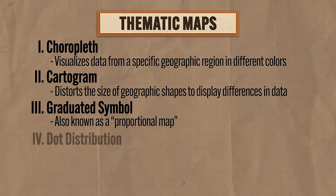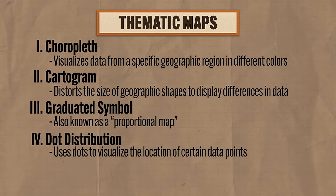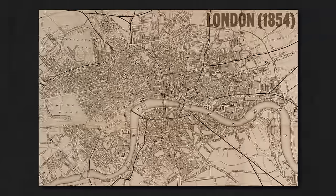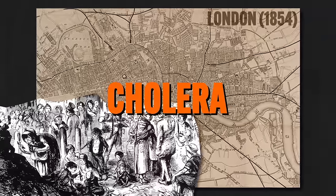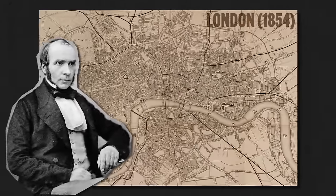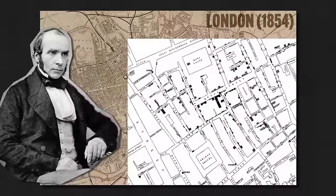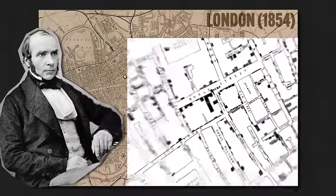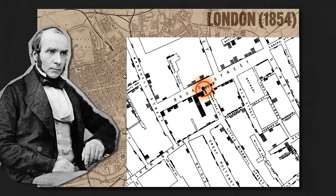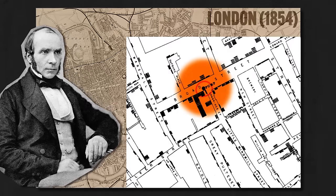The fourth kind of thematic map is the dot distribution map, which uses dots to visualize the location of certain data points. Back in the mid-1800s, there was an outbreak of cholera in London making a lot of people really sick. The best explanation people could figure out was that the disease was spreading because of bad air — that's it. But then came along our boy Jon Snow, who visited every place where an infection occurred and plotted them on a dot distribution map. In doing this, he discovered that the infections were spatially arranged around a common water pump, and he discovered that people were getting sick because the water was contaminated. That's astonishing!